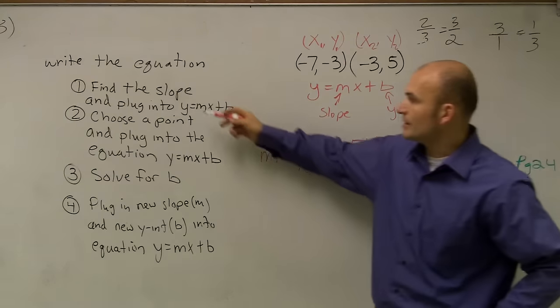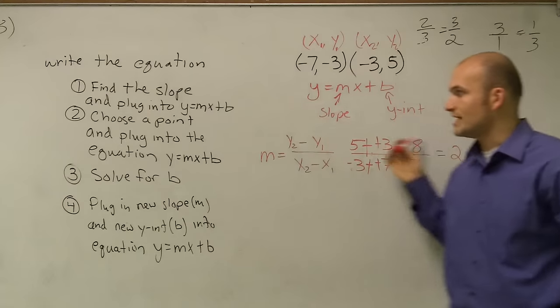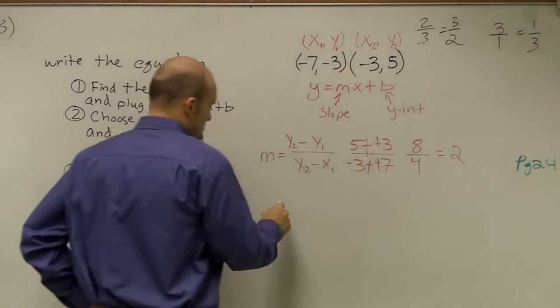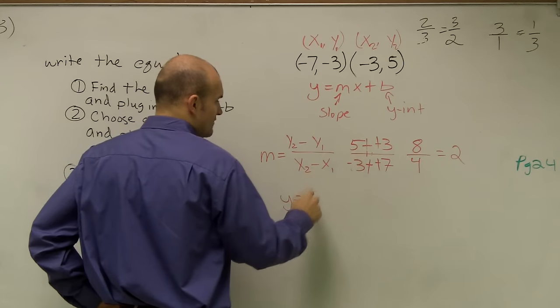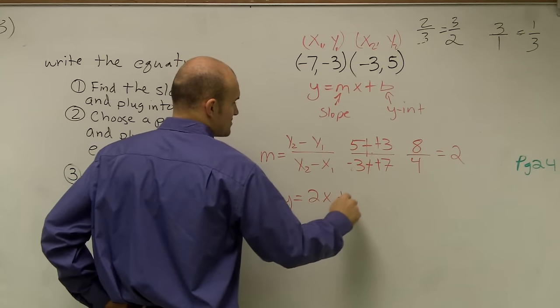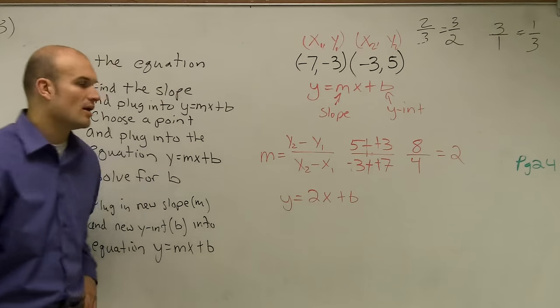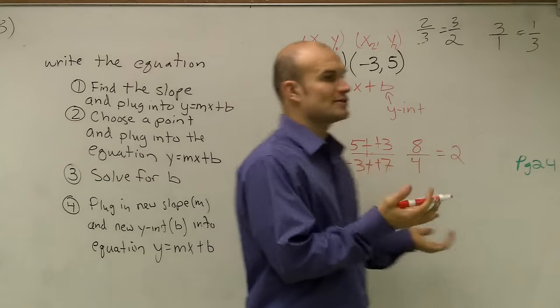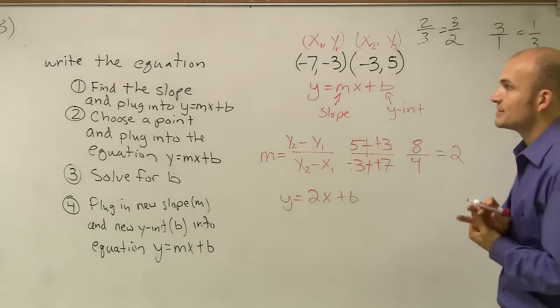So now, what I wrote up there is I find the slope, which I did. And then I need to plug it into y equals mx plus b. So I say y equals, instead of m, I can say 2x plus b, because I'm saying I want 2 to represent my new slope. Alright? So now I know what the slope is, but I don't know what the y-intercept is.